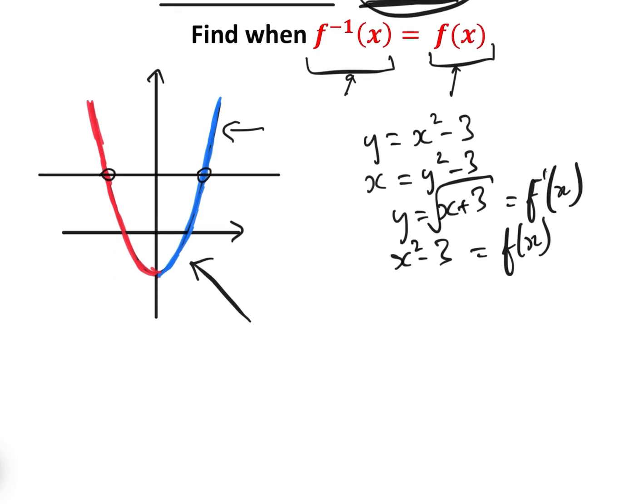and of course we have the function we know is x squared minus 3. So what we need to do now, we're using the traditional method, and again I will show the much simpler method in a minute, is we would say, OK, so we let f inverse x equal f(x), and we solve, i.e. the square root of x plus 3 equals x squared minus 3.